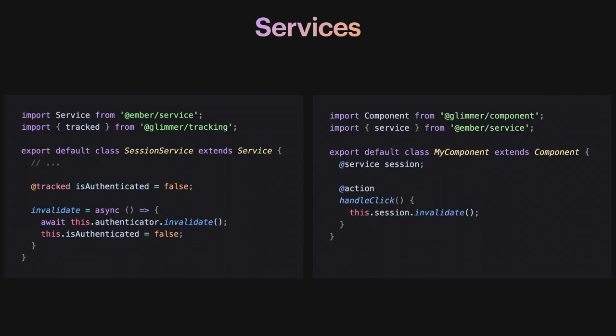Services are probably the closest thing we have to context right now in Ember, but they don't really address the same problem. Services are global — you can have multiple instances but you don't usually do that — so a service is usually a singleton instance global throughout the app. Any component accessing a service will be accessing the same value. So if you want to restrict the state you're passing to a specific component tree, that's not going to do it. This is global; it's not going to help solve your issues.